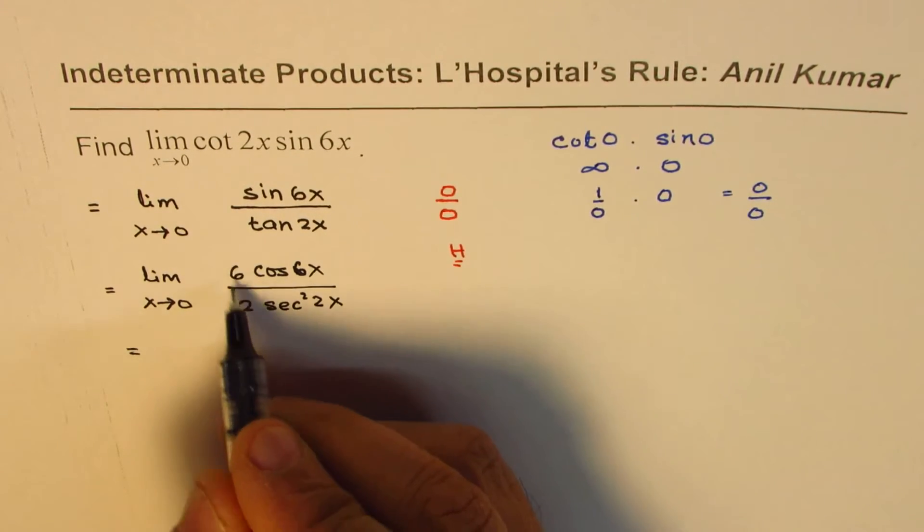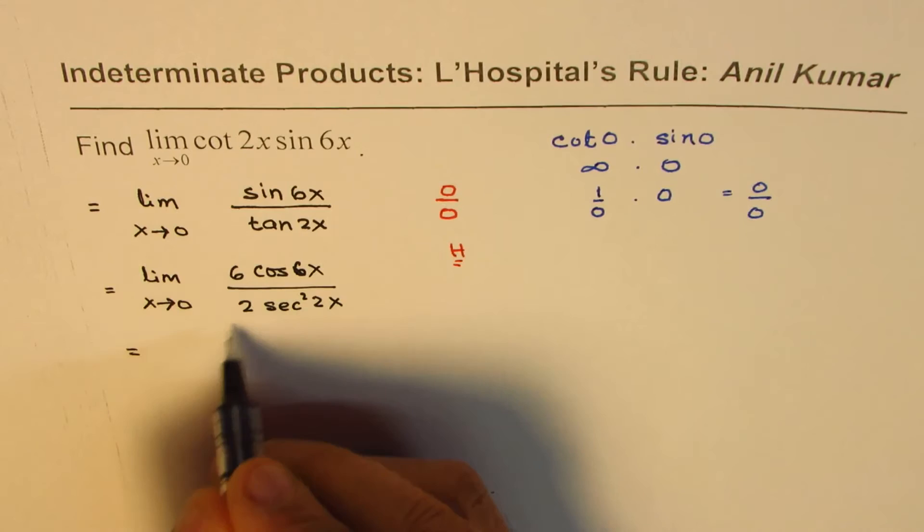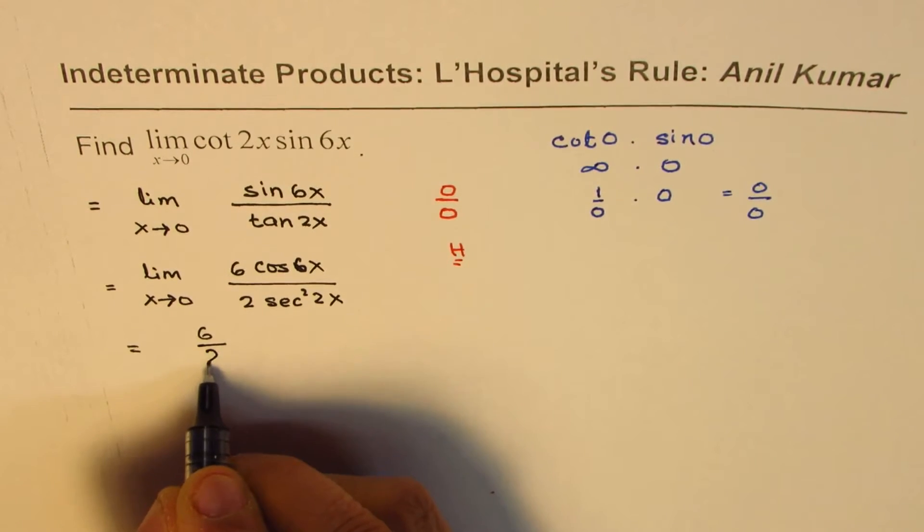So what we get here is, you could actually simplify this also, but I will keep it as such. 6 over 2, we will simplify it to 3 later. 6 over 2.